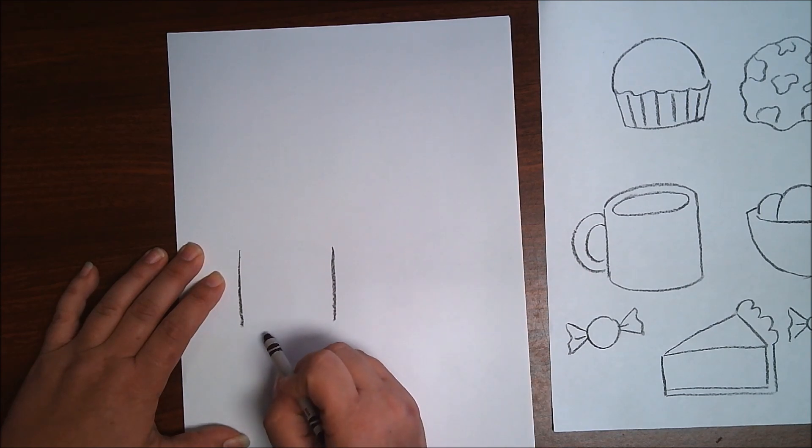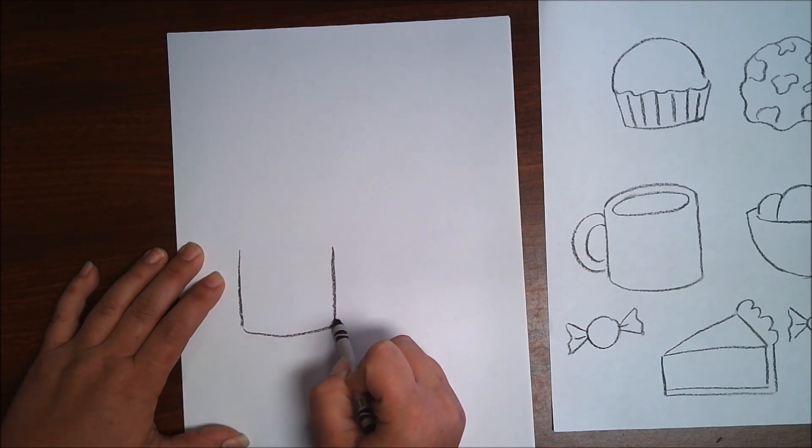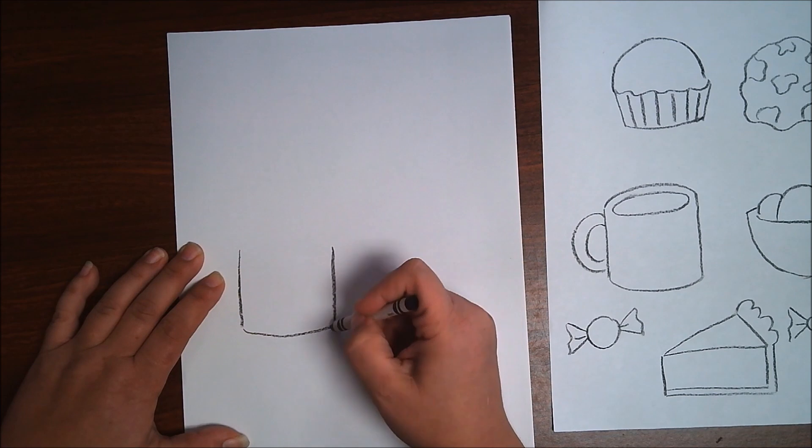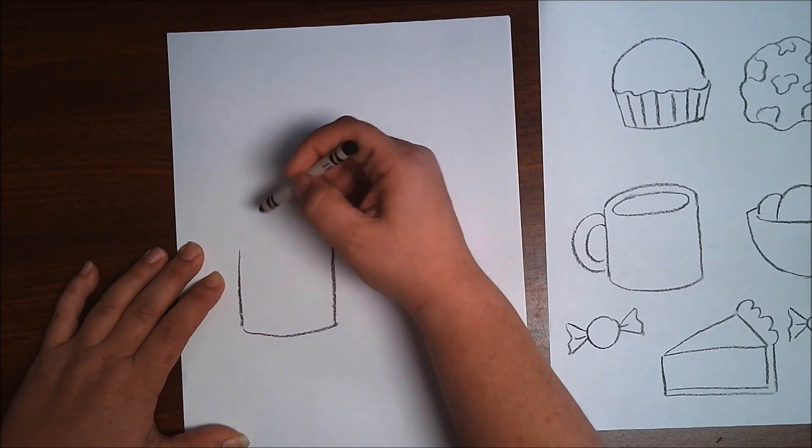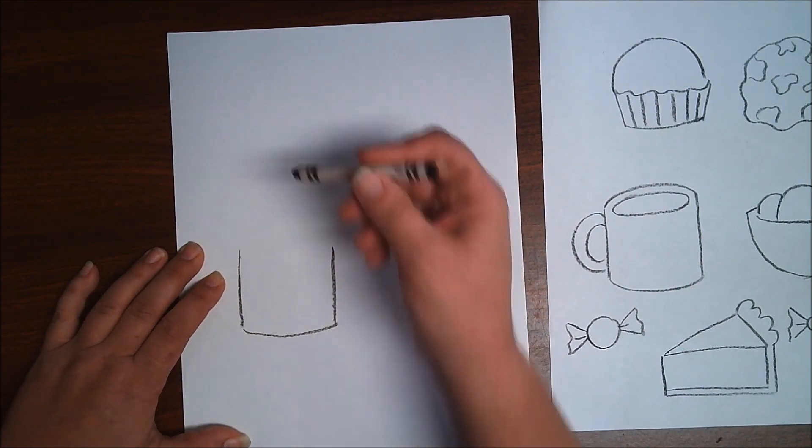And instead of drawing a straight line across you might want to try doing just a little bit of a curve. We're practicing for the top part. So now I've got them connected. Add that a little bit there and then I want to do that same kind of curve on the top.